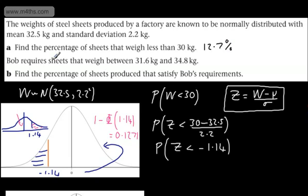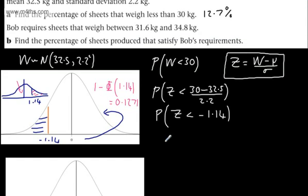So if we get this value, it's going to be 12.7%. Bob requires sheets that weigh between 31.6 kilograms and 34.8 kilograms. We need to find the percentage of sheets produced that satisfy Bob's requirements. So we can write this using a double inequality. And initially, we can simply state that we want the weight to be between 31.6 and 34.8.